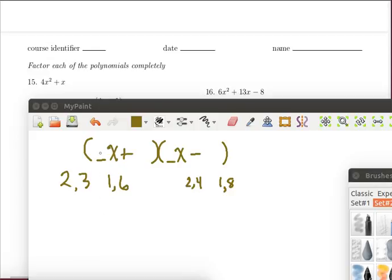So my choices for the coefficients on x are 2 and 3 and 1 and 6, and the choices for the constant coefficient is 2 and 4 and 1 and 8. So I need to look through the possibilities that are available there.